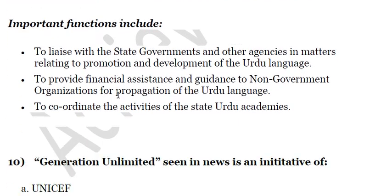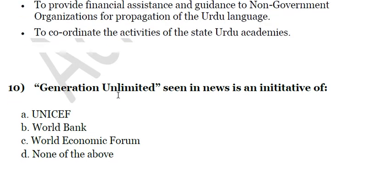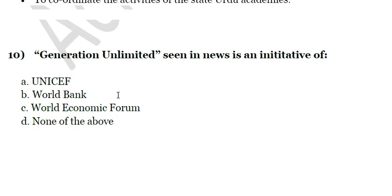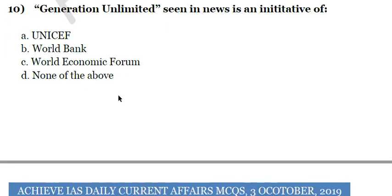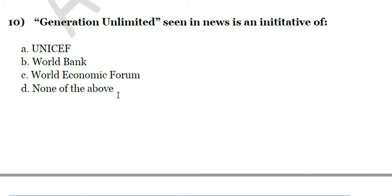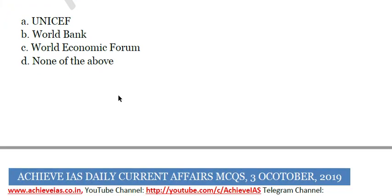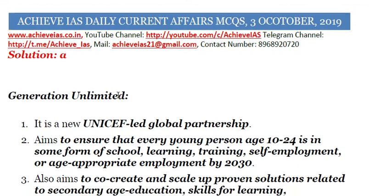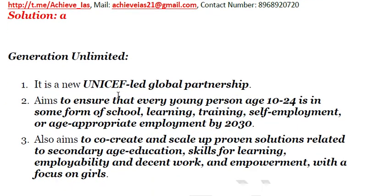Next, Generation Unlimited, seen in news, is an initiative related to — A. UNICEF, B. World Bank, C. World Economic Forum, D. none of the above. The answer is UNICEF. Generation Unlimited is a UNICEF-led global partnership to ensure that every young person between the age of 10 to 24 is in some form of school, learning, training, self-employment, or age-appropriate employment by 2030.